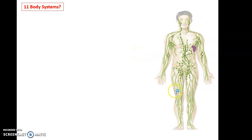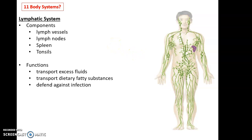And we have this lovely system here known as the lymphatic system. The lymphatic system includes components such as lymph vessels shown in green lines here, lymph nodes, the little circles attached to those green lines, the spleen here in purple, the tonsils, which you can't see in this picture.